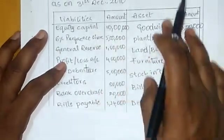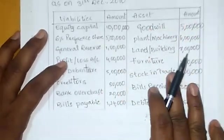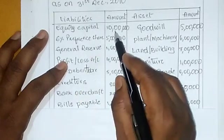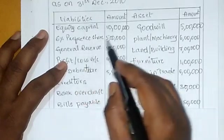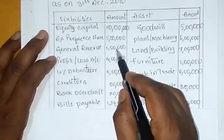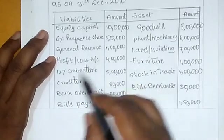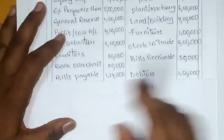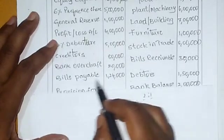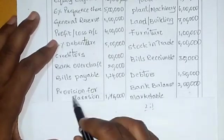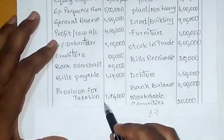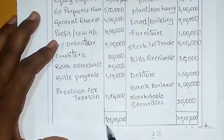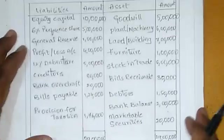Let's look at the liabilities side. Equity capital 10 lakhs, preference shares 5 lakhs, general expenses 1 lakh, profit and loss account 4 lakhs, debenture 5 lakhs, creditors 80,000, bank overdraft 20,000, bills payable 1 lakh 24,000, provision for tax 1 lakh 76,000. Total liabilities come to 29 lakhs.